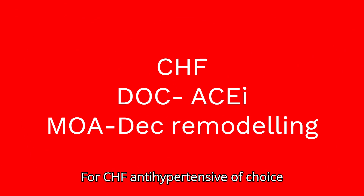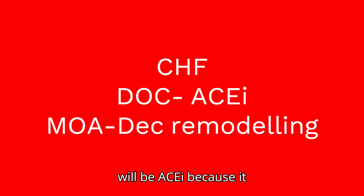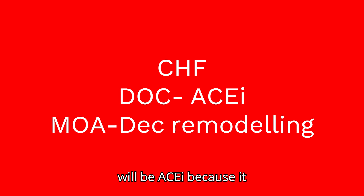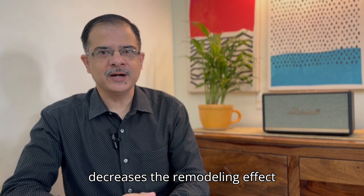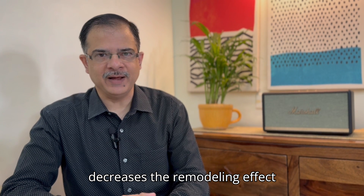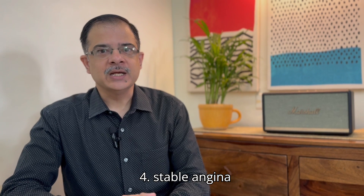The third comorbid condition is CHF. For CHF, the antihypertensive of choice will again be ACE inhibitors, because it decreases the remodeling effect.